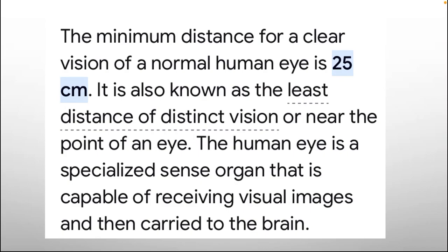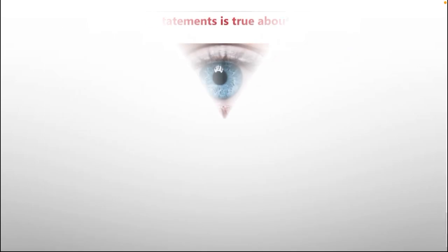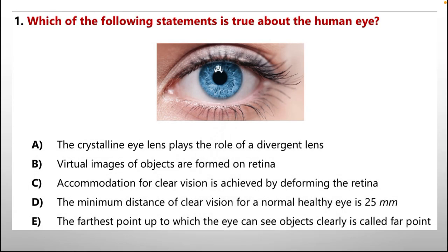For option D, the minimum distance for clear vision of a normal human eye is 25 cm, also known as the least distance of distinct vision or the near point of the eye. In the option, it was written 25 mm; however, the correct value is 25 cm, which is larger than millimeters. So option D is also incorrect.